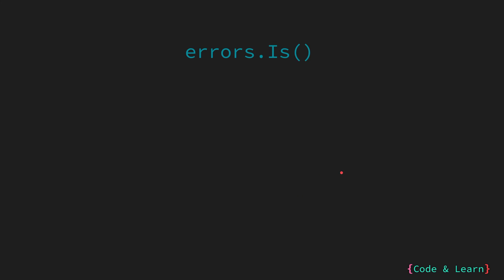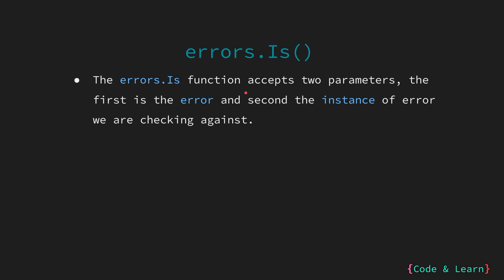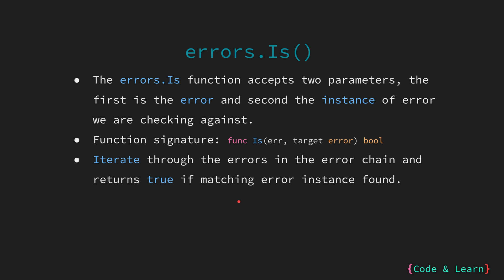First, let us look at the errors.Is function. The errors.Is function accepts two parameters. The first is the error we are checking, and the second is the instance of the error we are checking against — for example, a sentinel error, which is a variable or instance of an error. The function signature is: func Is(error, target) returning a bool. The errors.Is function will go through the error chain, also known as the error tree, unwrapping errors and comparing errors in the chain with the target instance.